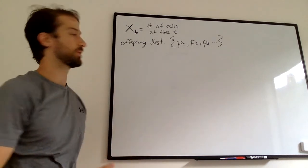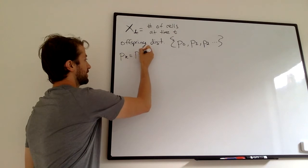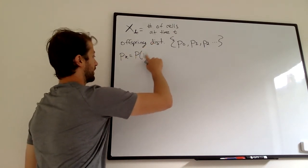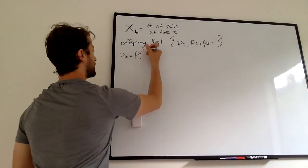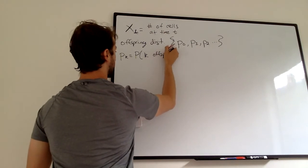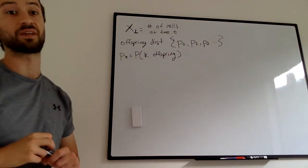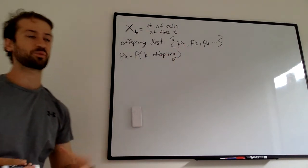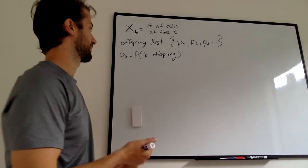Basically, this is just a vector of probabilities, where p sub k equals the probability that you have k offspring. So p sub 0 is the probability that you have no offspring, p sub 1 you have 1 offspring, p sub 2 you divide to 2 offspring.